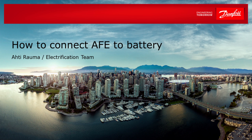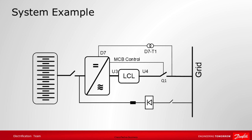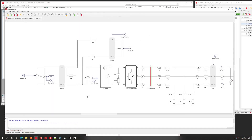This video shows one example of how to connect an active front end to a battery system. We have a battery drive and the charging comes from the grid side. We need to match the voltage to the battery in the DC link before we can close the DC breaker.